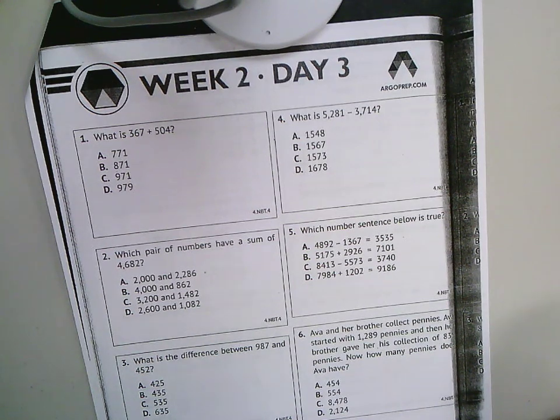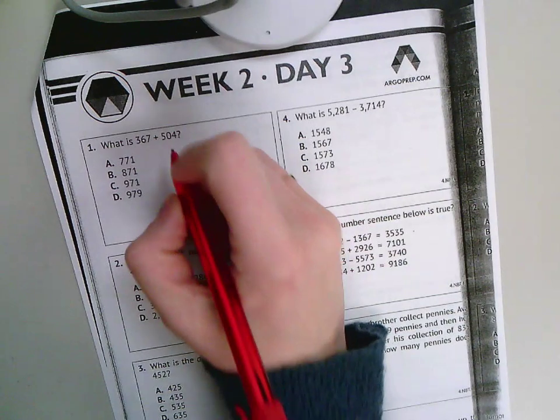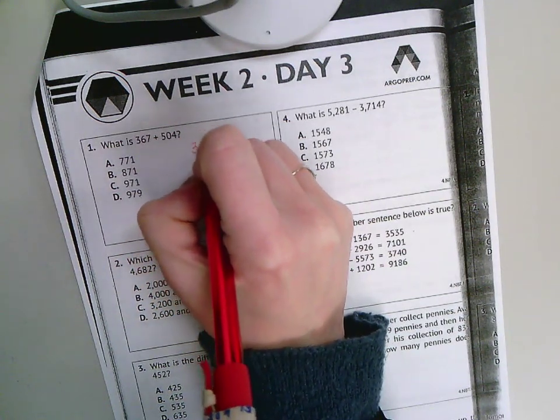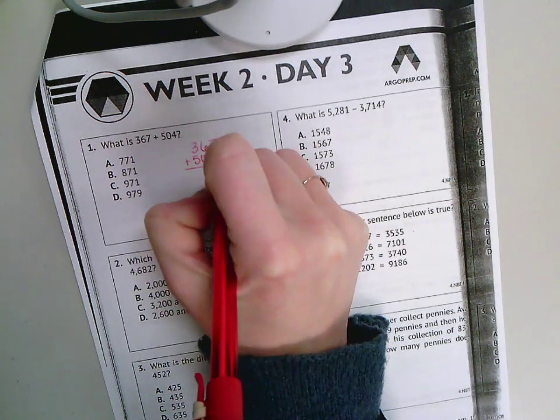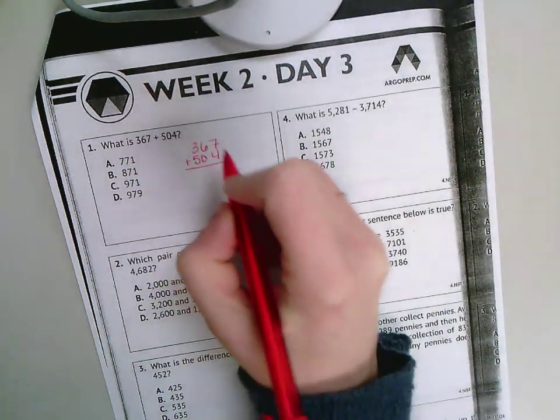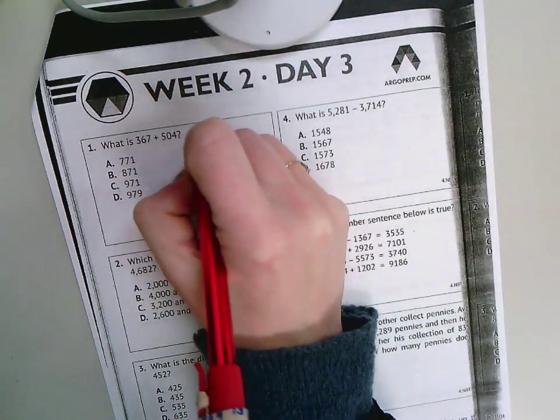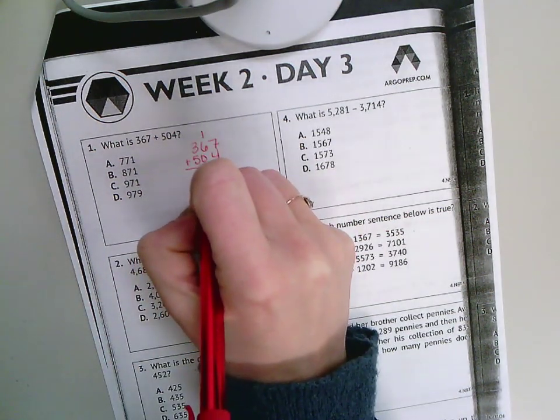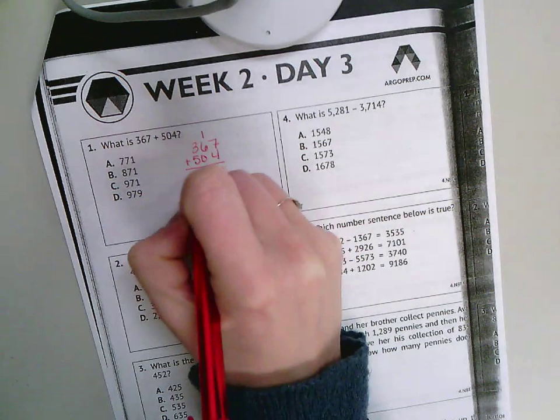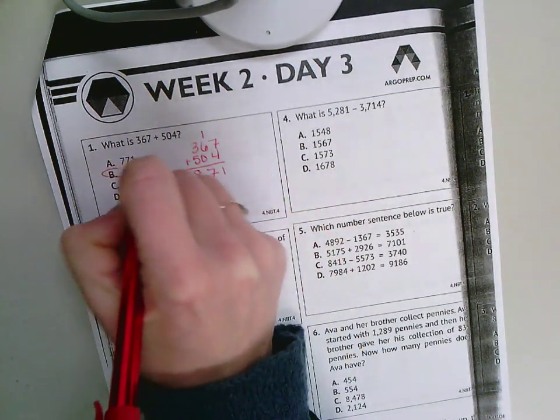Number one, what is 367 plus 504? If I set up my math problem lining up all my place values: 7 plus 4 is 11. 6 plus 1 is 7, plus 0 is 7. And 5 plus 3 is 8, so 871.